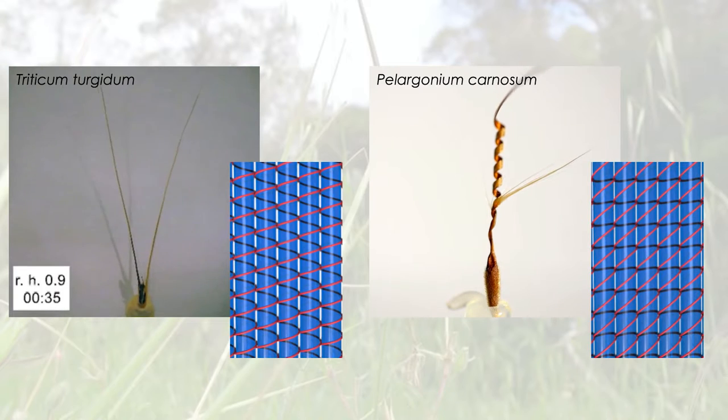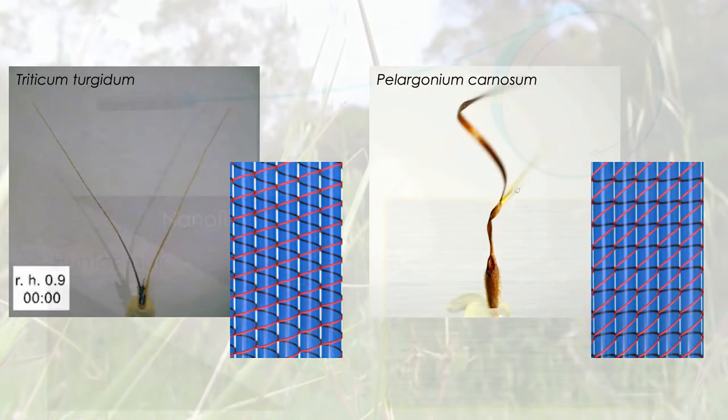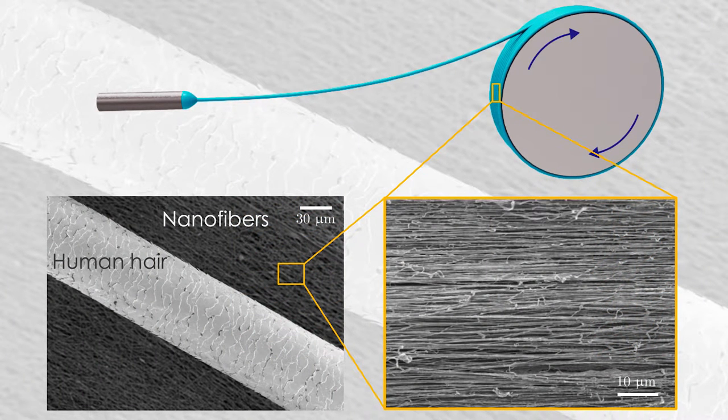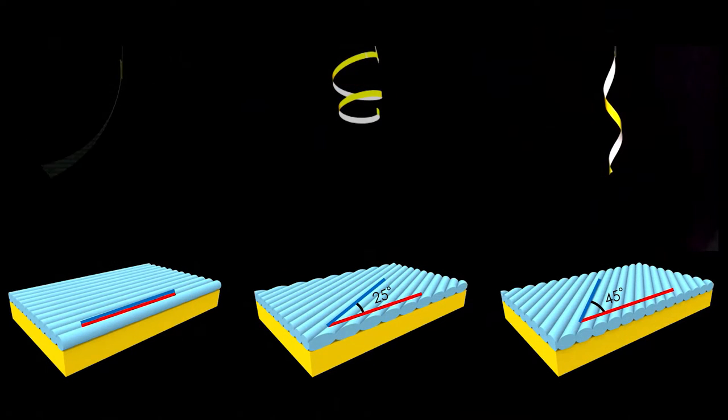These seeds suggest that water-powered machines can move in different ways by slight changes of their inner structure. A key to making an effective seed mimic is to produce and align extremely fine fibers. My lab uses strong electrical field to pull fibers thousand times thinner than human hair out of polymer solutions. Spooling the fibers on a rotating cylinder aligns them in one direction.